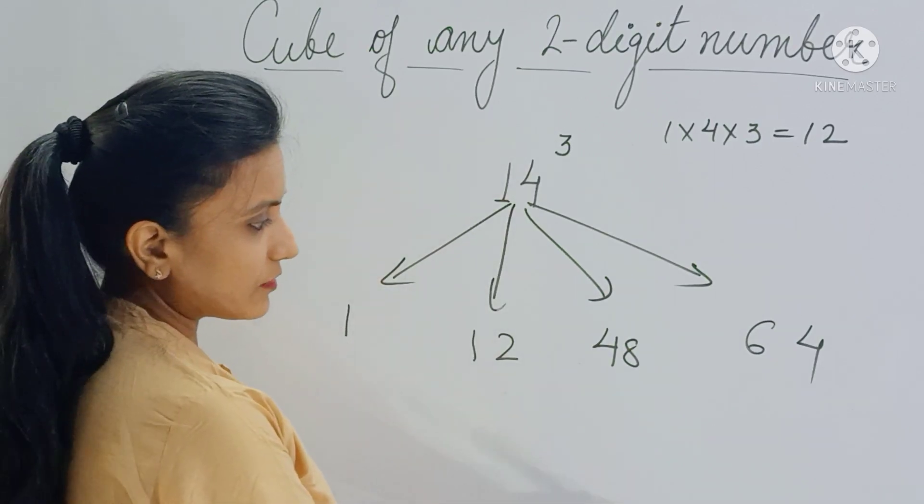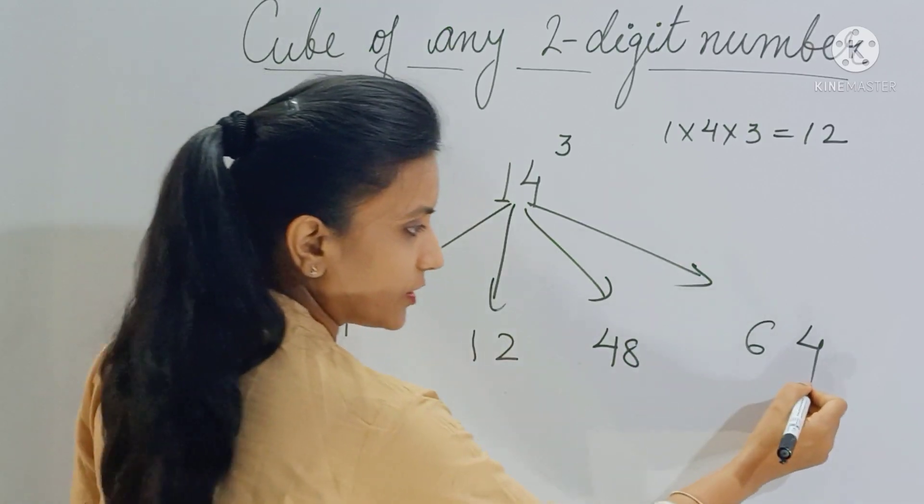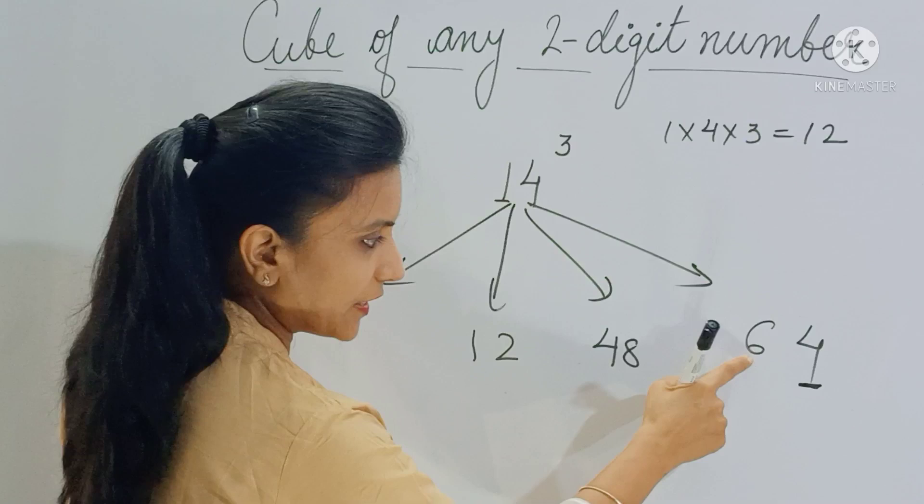Now in the final answer we write only the unit place digit. So here this is your unit place, so you write 4 here. And the remaining number becomes the carry forward, so you have to add 6 here. It will be 54, right?